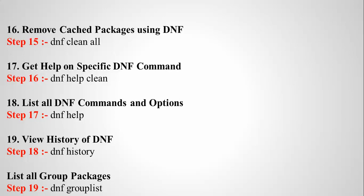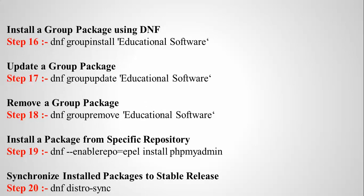To view the history of DNF commands, type: dnf history — this will show all the commands you have typed, up to hundreds of past entries. To list package groups, type: dnf group list. To install a group of packages, type: dnf group install 'Educational Software'. To update a group, type: dnf group update followed by the package group name.